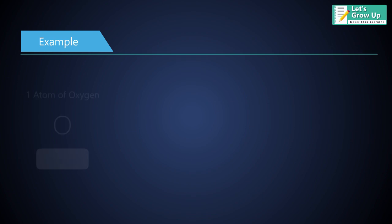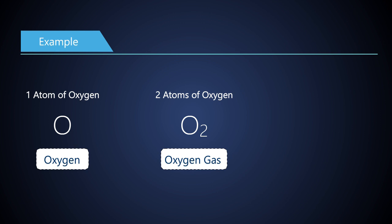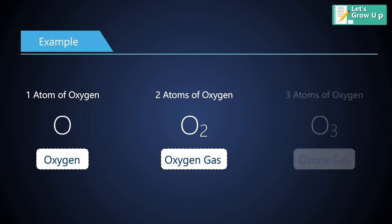For example, O is the symbol for a single atom of oxygen. On the other hand, O2 is the symbol for a molecule of oxygen gas consisting of two oxygen atoms. And O3 is the symbol for a molecule of ozone consisting of three oxygen atoms.